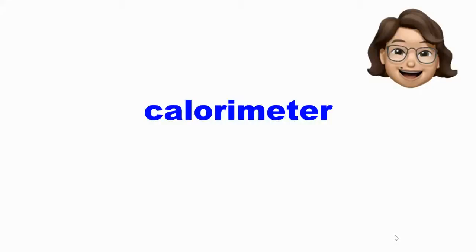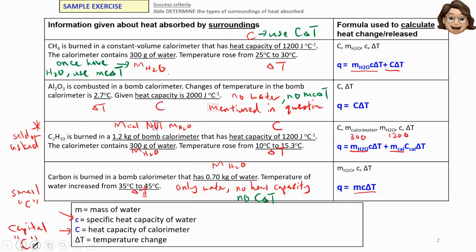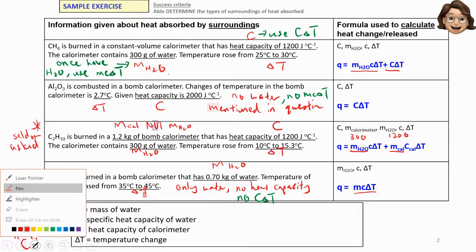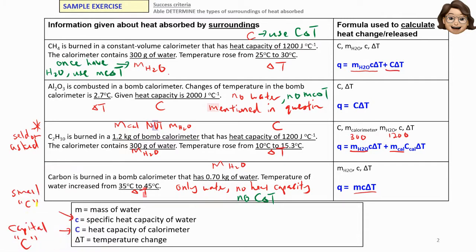Let's learn about calorimeters. There are two types of calorimeter: one is the bomb calorimeter and another one is the simple calorimeter. Now we shall focus on the bomb calorimeter first.